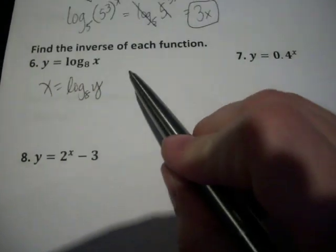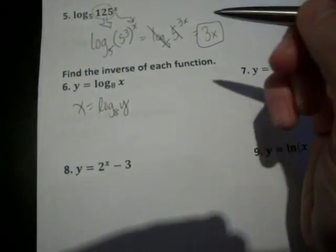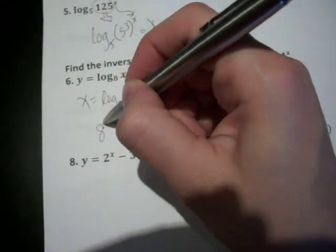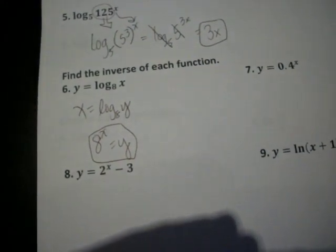So this is obviously in log form because it has a log, so if you go back to the beginning of 7.4, we're going to rewrite this into exponential form. And that one's actually done because it's equal to Y.